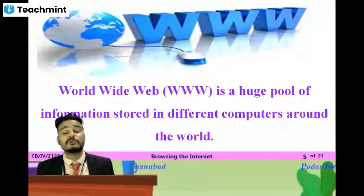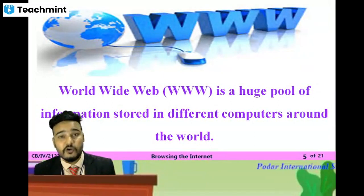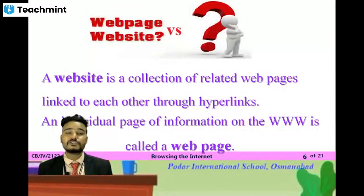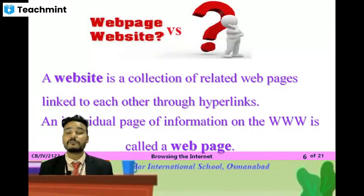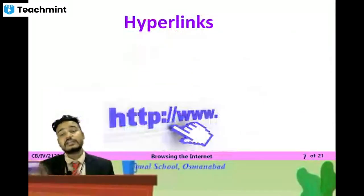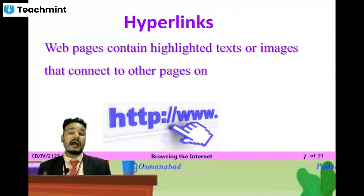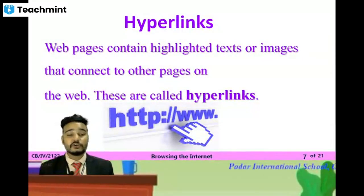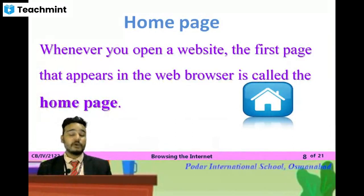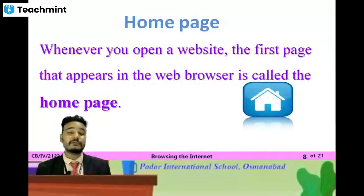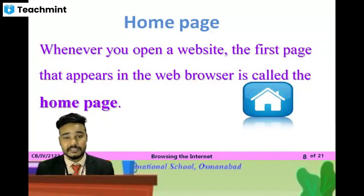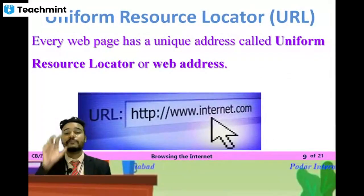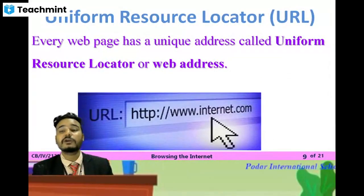We have also learned about the WWW, which is a huge pool of information stored online. Then we learned about a web page, which is an individual page of information, and a website, which is a collection of related web pages. Hyperlinks are highlighted text or images on a page. When you open the first page of any website or web browser, that is your home page — the address of that location.